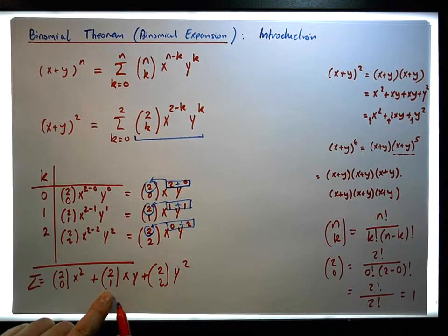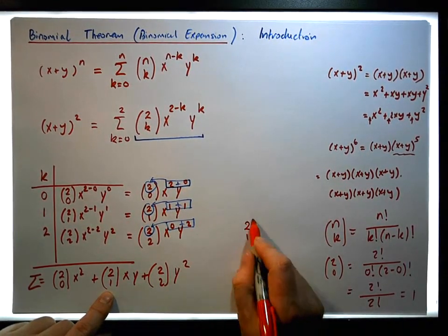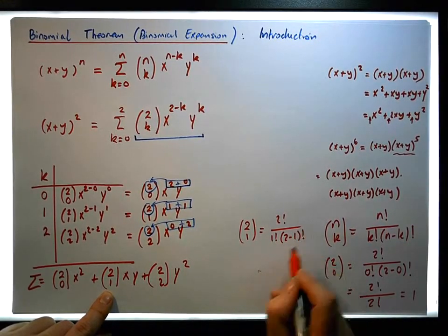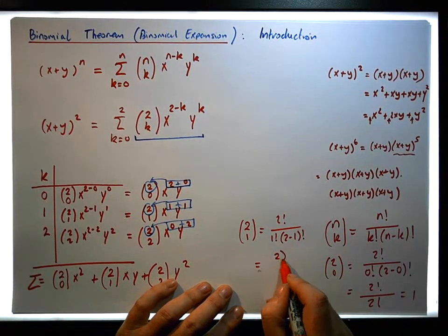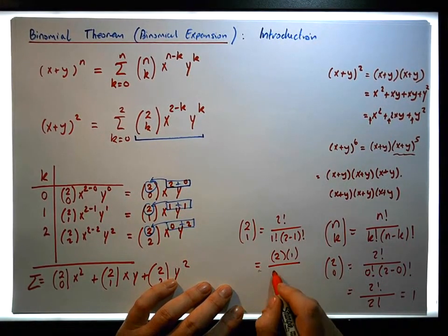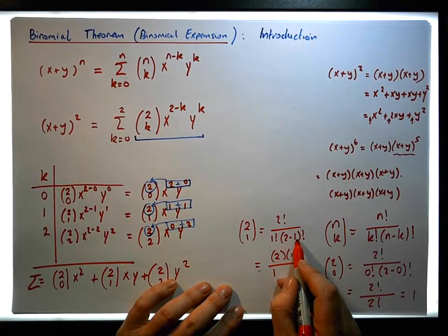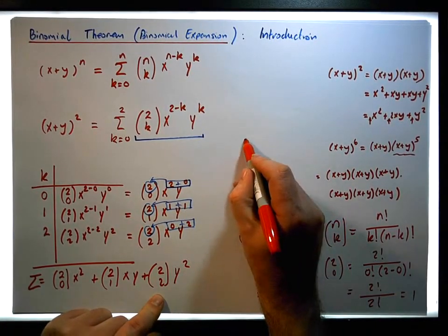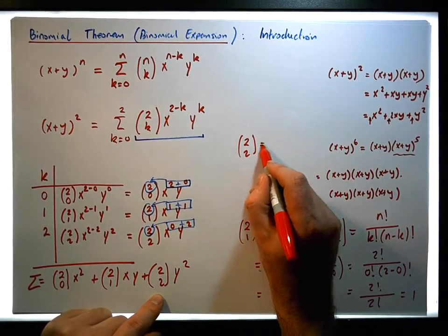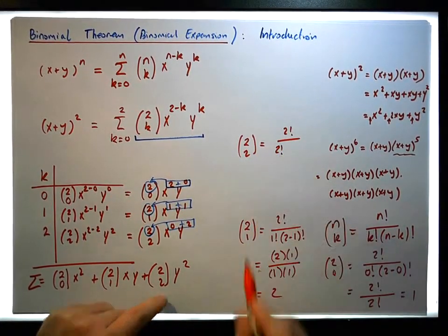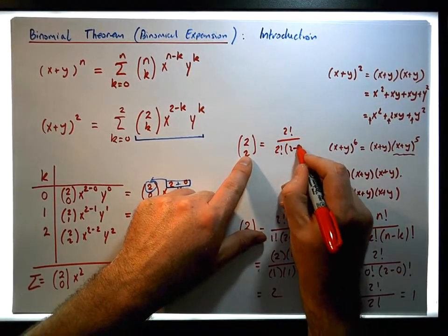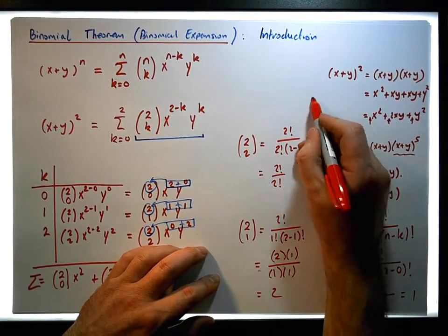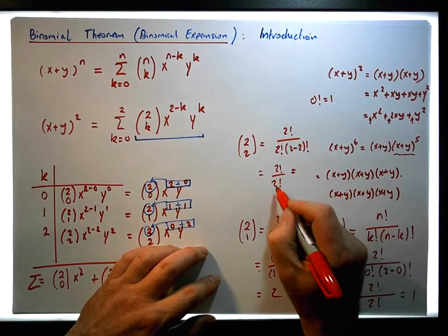What about 2C1? Well, 2C1 is two factorial all over one factorial times (two minus one) factorial, which is the same as two times one, all over one factorial — which is just one — times one factorial, which is one. So we end up with two. And similarly, 2C2 is two factorial all over two factorial times (two minus two) factorial, which is two factorial over two factorial times one, because zero factorial equals one. This gives us a value of one.